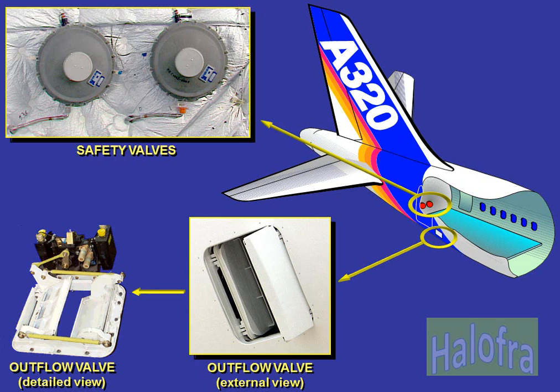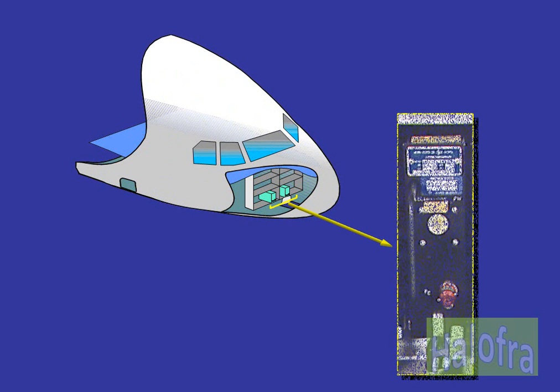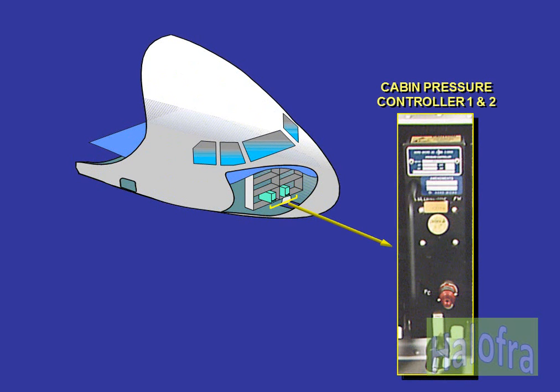Pressurization is achieved by means of a dual gate type outflow valve. The outflow valve is operated by three electrical motors: two for automatic mode and one for manual mode. Two identical cabin pressure controllers, one and two, related to systems one and two, are located in the forward avionics bay.